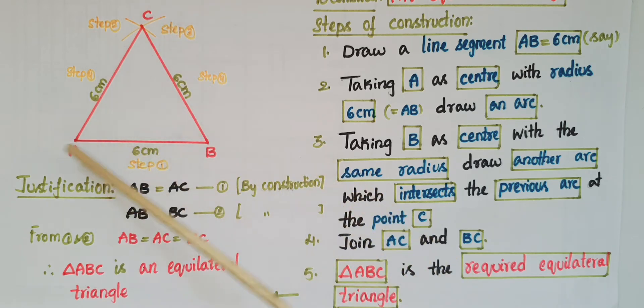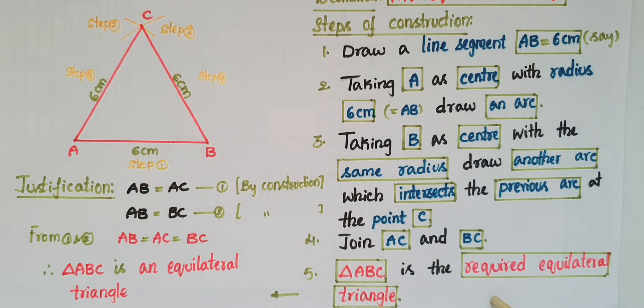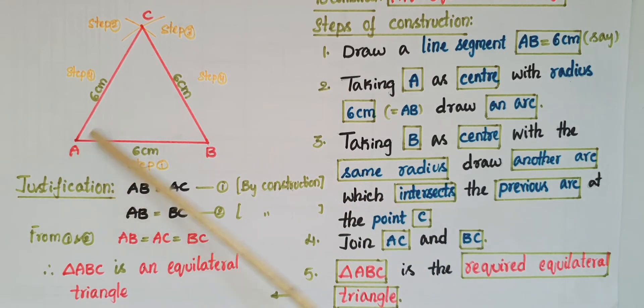Now triangle ABC is the required equilateral triangle. We know that AB is equal to AC, and AB is equal to BC. So from these two equations, AB is equal to AC is equal to BC. All these three sides are equal, so we can say the triangle ABC is an equilateral triangle.